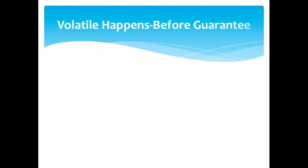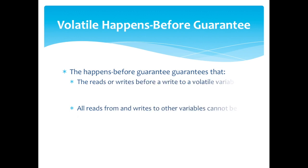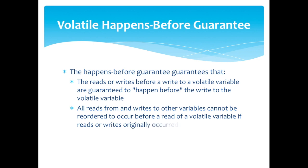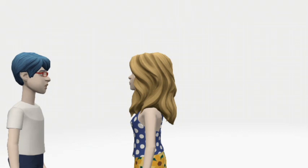To solve this issue, Java guarantees volatile happens before. All reads or writes before a write to a volatile variable are guaranteed to happen before the write to the volatile variable. All reads from and writes to other variables cannot be re-ordered to occur before read of a volatile variable if reads or writes originally occurred after the read of the volatile variable.